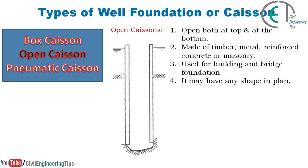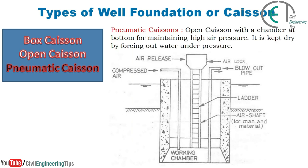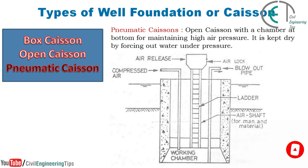The second type is open caisson. These are open both at top and at the bottom, made of timber, metal, reinforced concrete, or masonry. Used for building and bridge foundations. It may have any shape in plan. The third type is pneumatic caisson — an open caisson with a chamber at the bottom for maintaining high air pressure. It is kept dry by forcing out water under pressure.